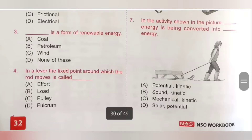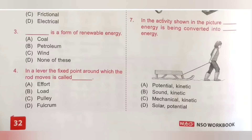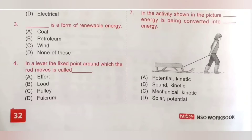Question 7: In the activity shown in the picture, dash energy is being converted into dash energy. Option A: Potential-kinetic, B: Sound-kinetic, C: Mechanical-kinetic, D: Solar-potential. The girl is applying muscular force on the slide, so mechanical energy is being converted into kinetic energy when the slide moves. Option C is the correct answer.